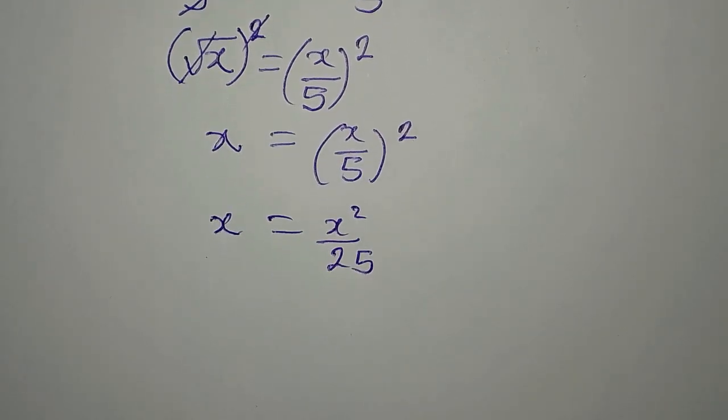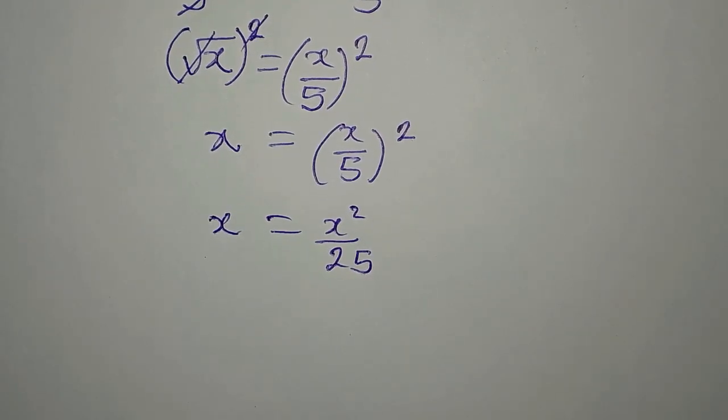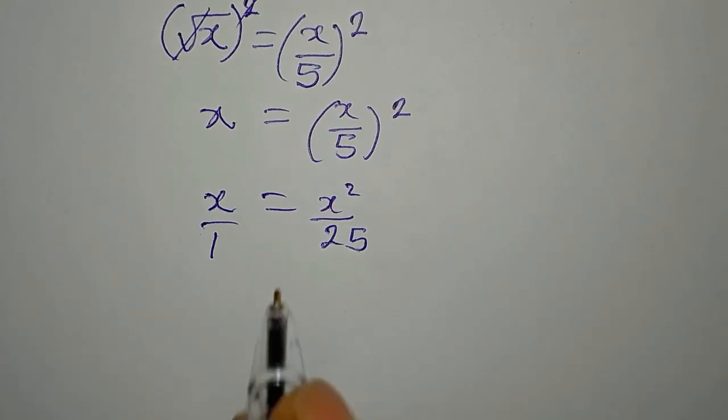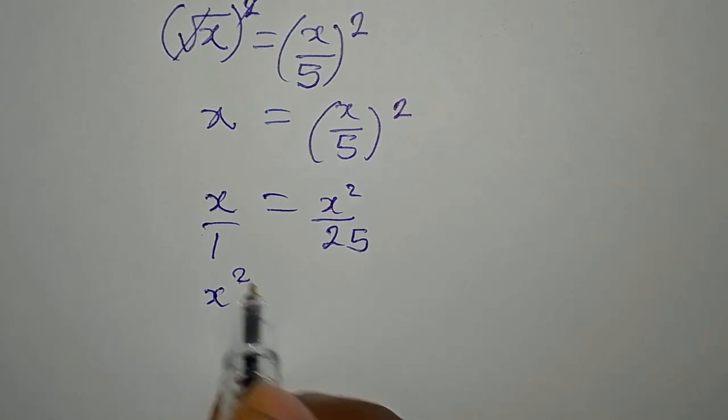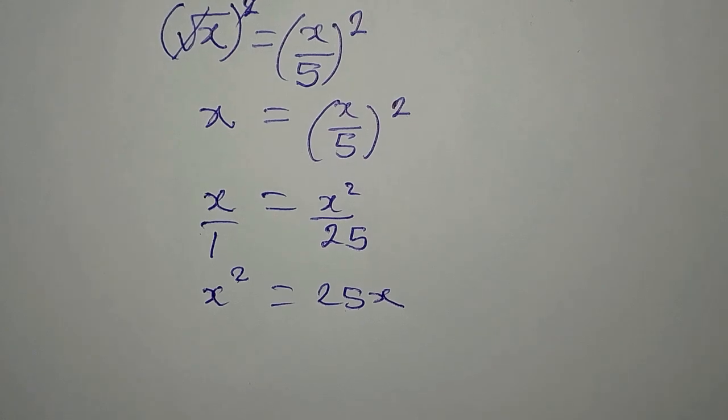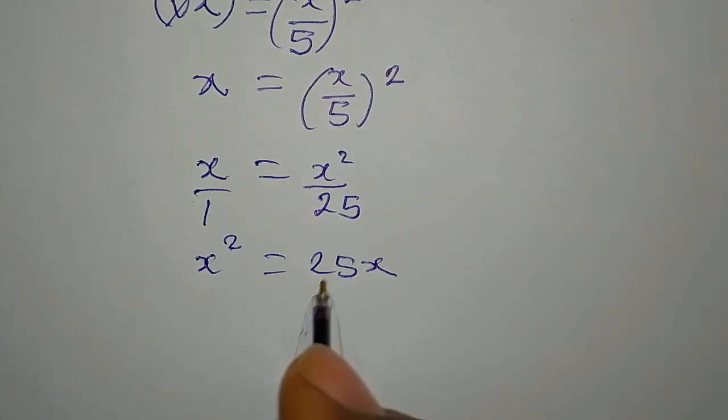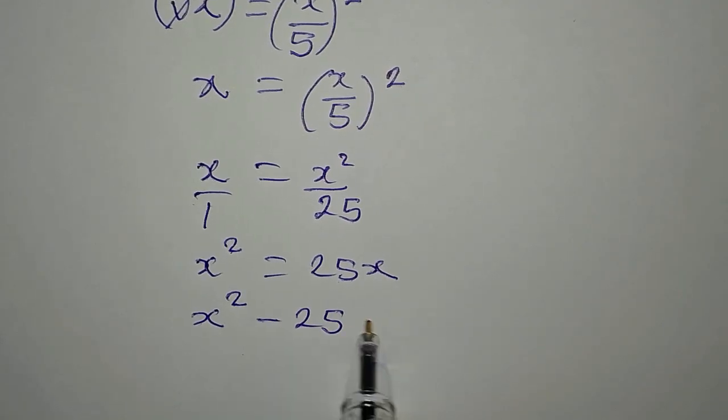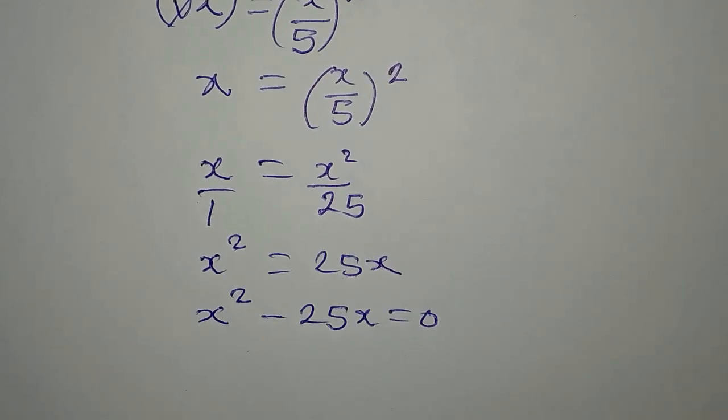Are you seeing that? So from here, what do we do? This is still over 1. So we still have to cross multiply. So when we do that, we have x squared equals 25x. Now, let's not divide both sides by x. That would be wrong. So take this to the left. And we have x squared minus 25x equals 0.